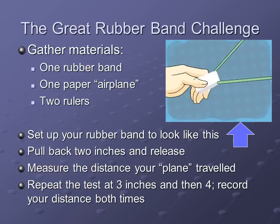Now for this next portion, this is a lab we'd like you to try if you're viewing this video from home. Parents, if you're at home helping out, this would be a great chance to get involved. I would definitely pause the video for this slide and the next slide with questions. For the great rubber band challenge, you need a rubber band placed around your thumb and index finger, one paper airplane — just folded paper that locks into the rubber band — and two rulers: one to measure how far back you're pulling the rubber band, and another to measure how far the paper flies. Set up your rubber band so it looks like it does in the picture, load the paper in, and pull it back.